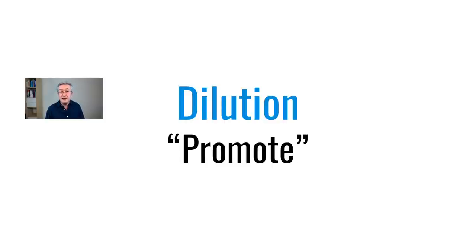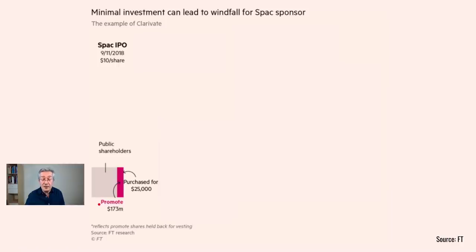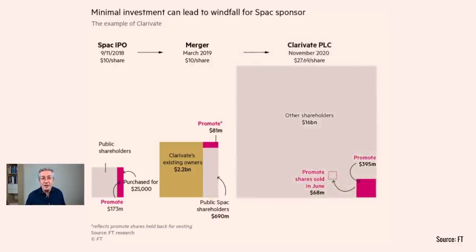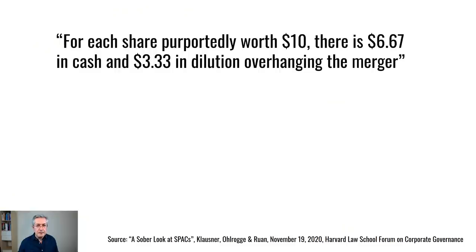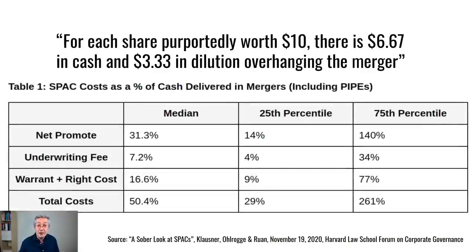Another problem is dilution: if you buy shares in the initial SPAC, you don't get full ownership when the merger occurs. The SPAC sponsors have shares set aside called promote shares, purchased for a nominal amount — in Clarivate's case just $25,000 — which become extremely valuable after the merger. That's great for the sponsor but not for investors. A paper called 'A Sober Look at SPACs' found that for each share worth $10 initially, only about two-thirds turns into cash for the deal — about a third is diluted.